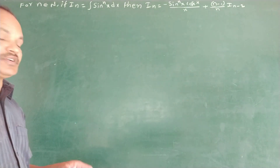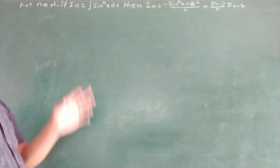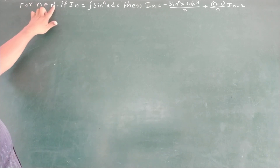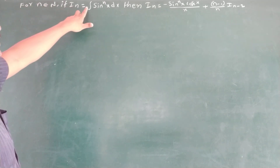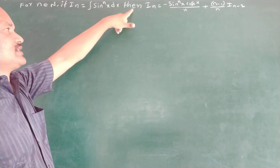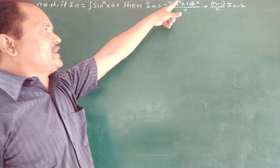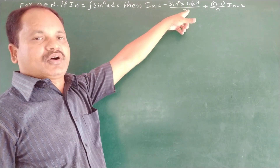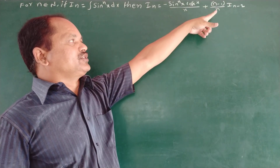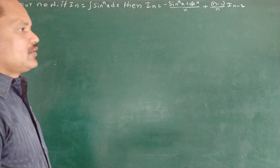Observe the question. It is from integration — the reduction formula. For n belonging to capital N, if Iₙ is equal to the integral of sinⁿx dx, then Iₙ is equal to minus sinⁿ⁻¹x times cos x divided by n, plus (n minus 1) divided by n, times Iₙ₋₂.